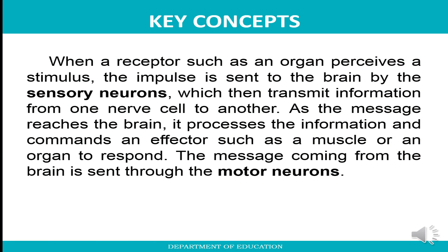To sum up today's session, we must remember this key concept: when a receptor such as an organ perceives a stimulus, the impulse is sent to the brain via sensory neurons. The sensory neurons transmit the information from one nerve cell to another via the interneurons. As the message reaches the brain, it processes the information, decides what to do, and commands an effector such as a muscle or organ to respond. The impulse is carried out through the motor neurons.